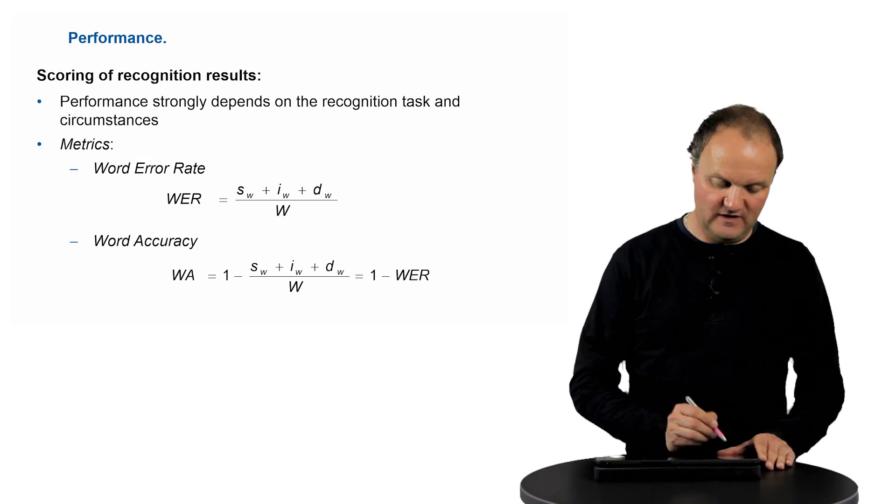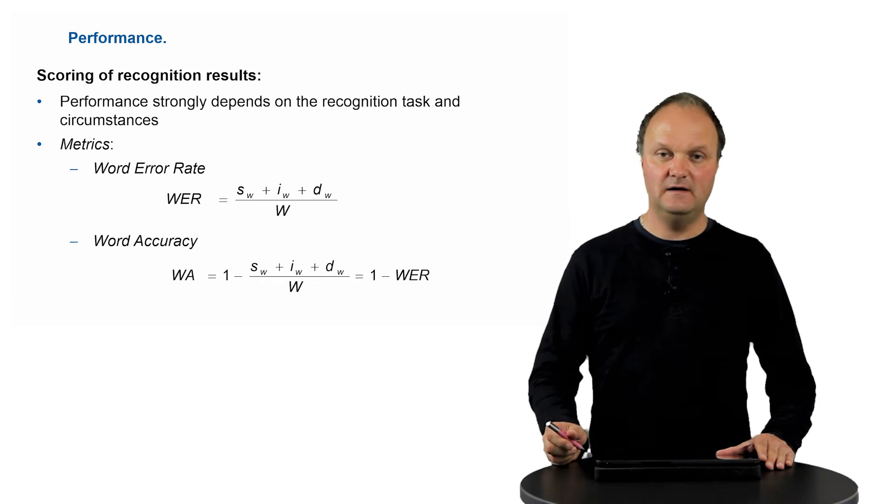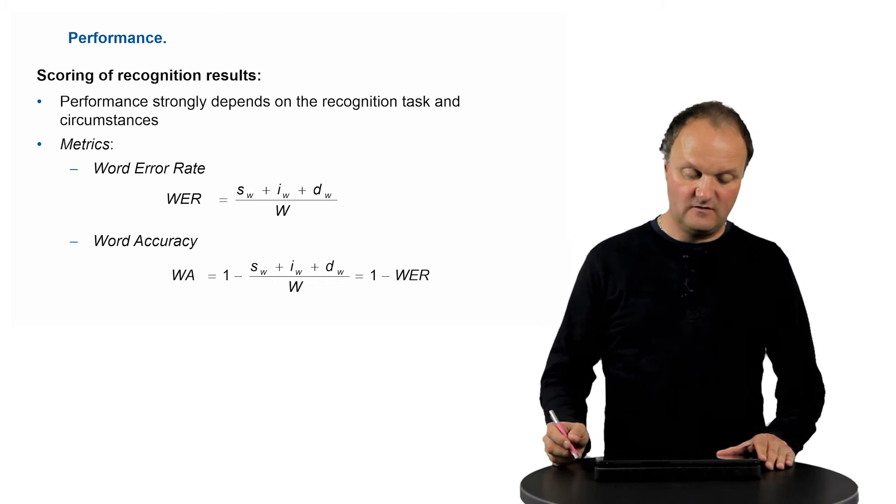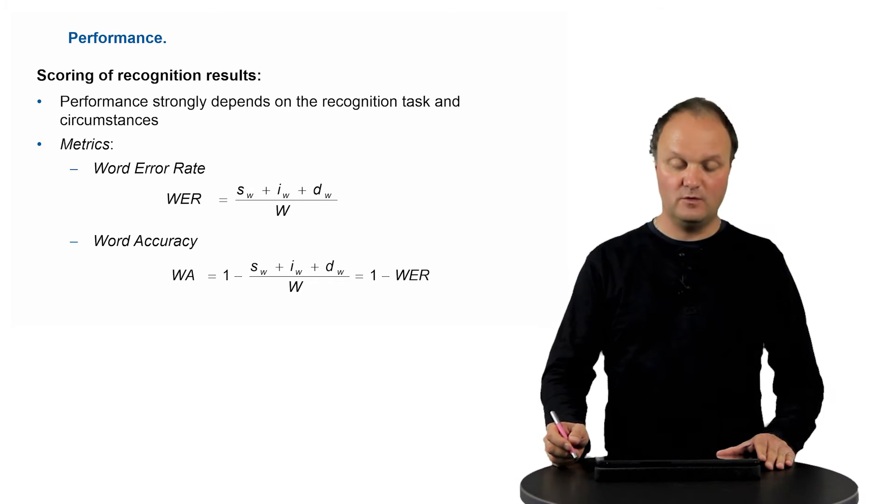There are two figures which are frequently used in order to identify the performance. One is called the word error rate and one is called the word accuracy.